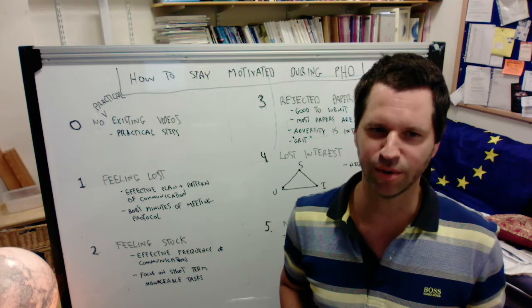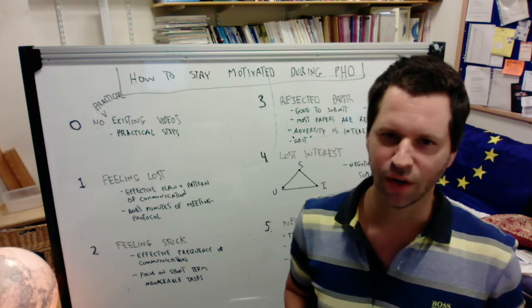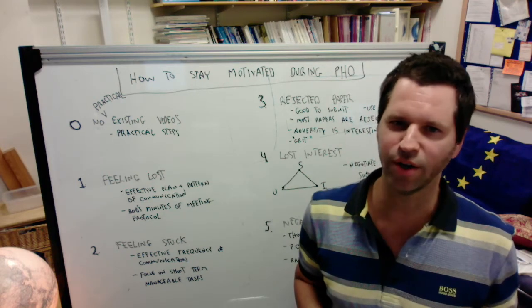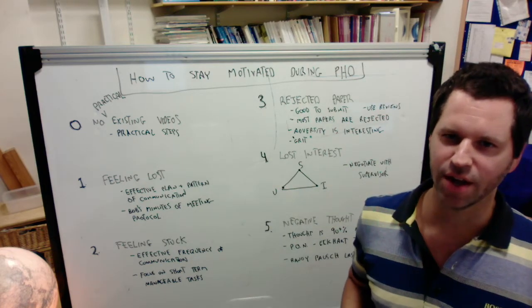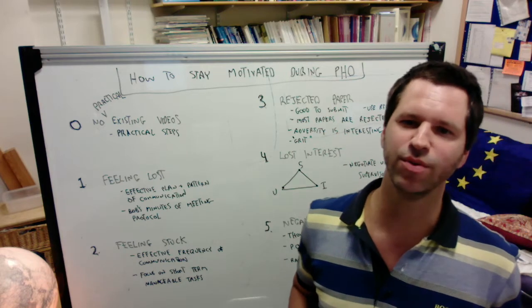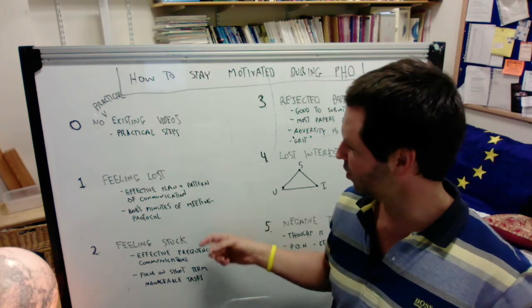Twice a month should be quite reasonable on average. It also depends on where you are during your PhD. In the beginning, you want higher frequency, and in the end, you want maybe lower frequency when you don't feel lost or stuck.